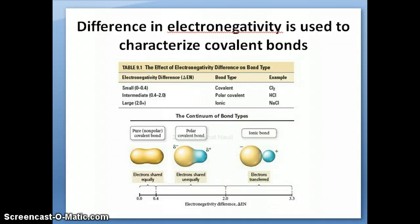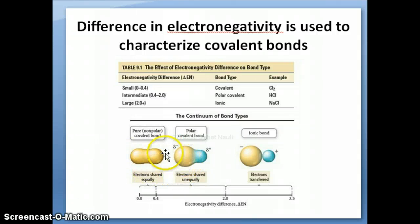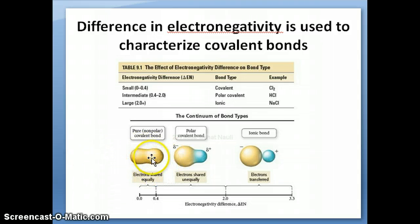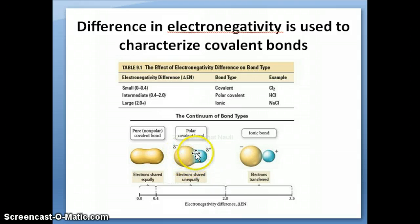In the previous video, I talked about the idea that covalent bonds are not always equally shared — some atoms actually tend to attract the electrons more toward itself than the other atom bonded to it. This is what we call electronegativity. The result is that some covalent bonds are nonpolar, because the electrons are approximately equally shared, whereas some covalent bonds are polar because their electrons are not equally shared.